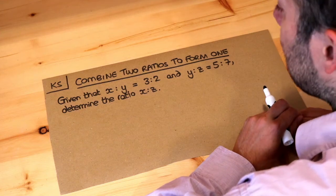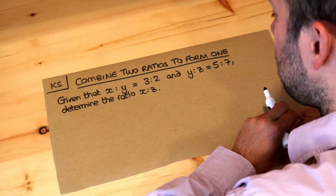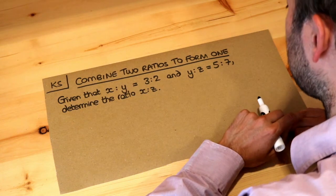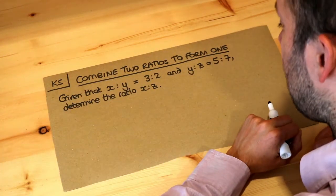Hello and welcome to this Dr. Osama's key skill video on combining two ratios to form one. So we've got two ratios: x to y is 3 to 2, and another ratio, y to z, is 5 to 7. We want to combine them into one ratio, x to y to z.